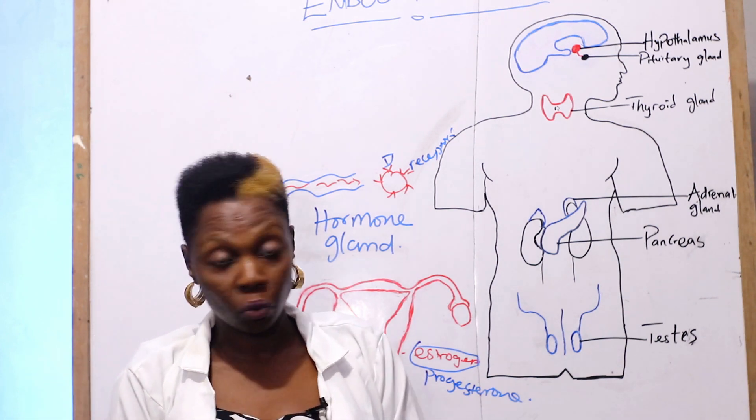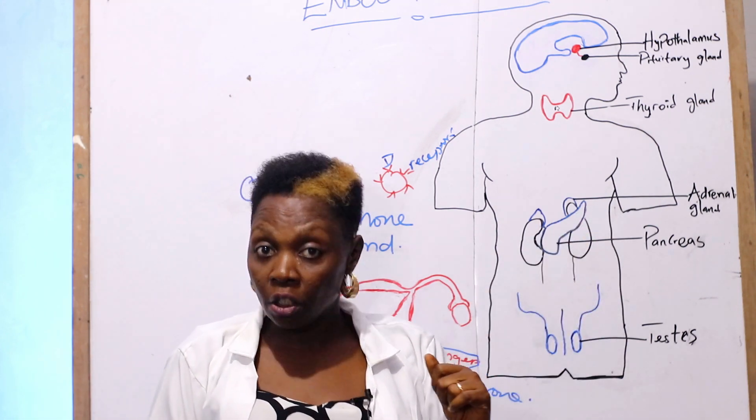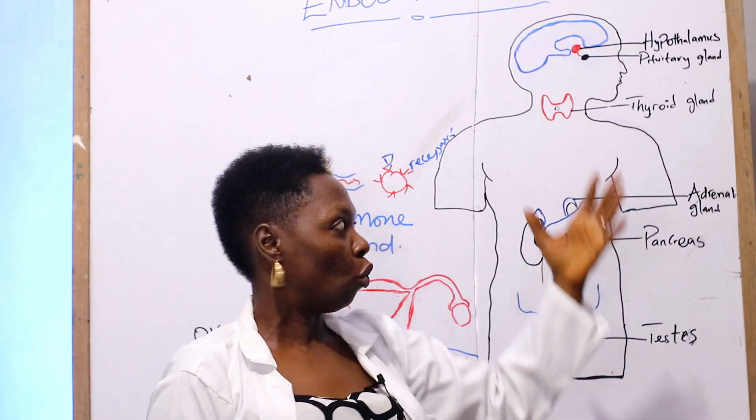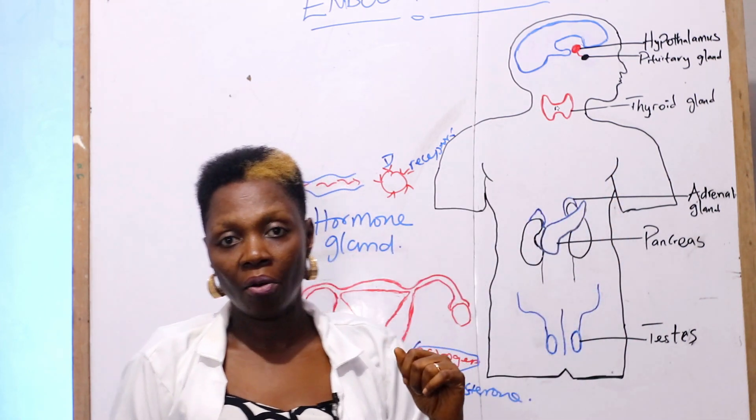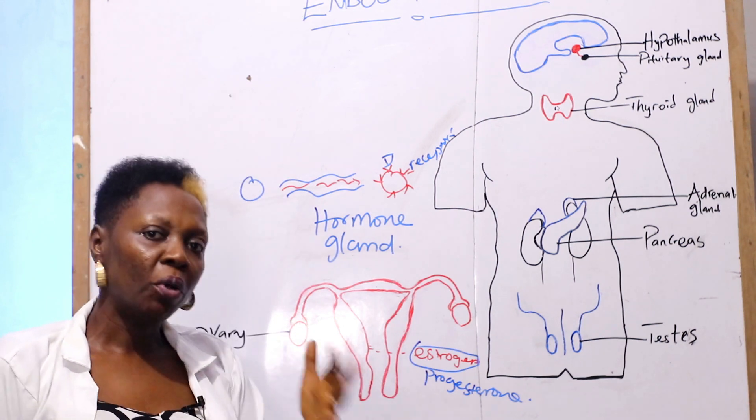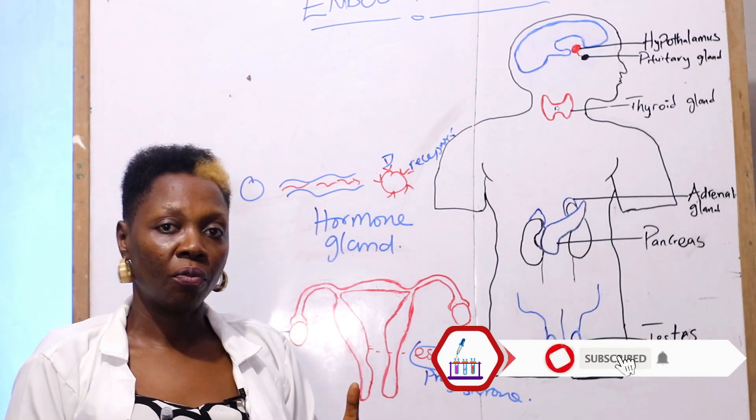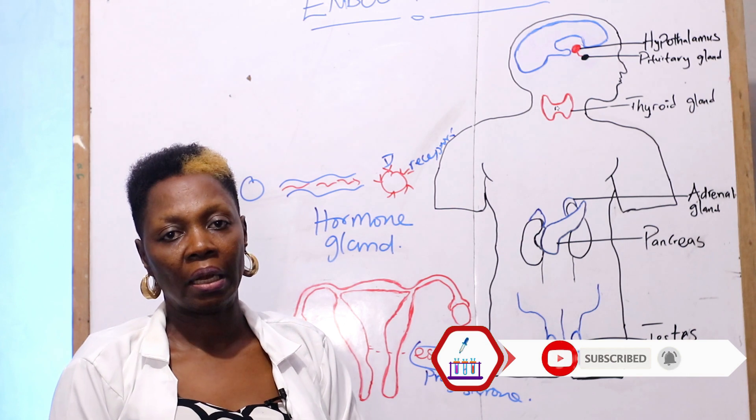We have the protein hormones, which is the insulin. We have the amino acid-derived hormone, which is thyroxine. We'll be looking at the function of these in detail in subsequent classes.